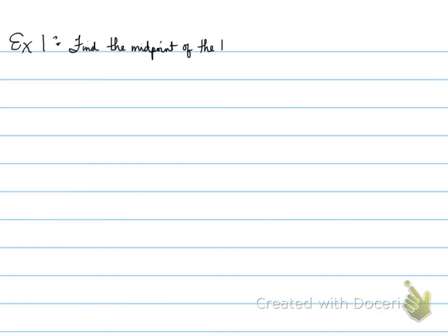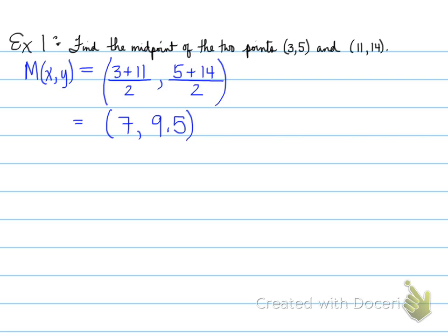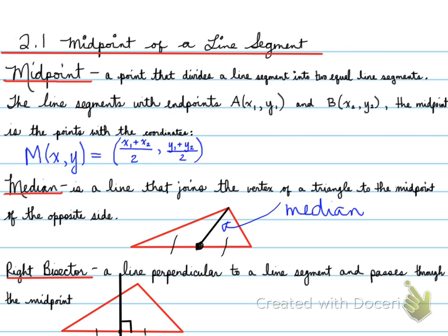Example number one. Find the midpoint of the two points 3, 5 and 11, 14. So all I want you to do for the first example is find the midpoint. Easy? Yes, it is, folks. Like I said earlier, we need to go back. We're going to look back at this particular equation, very important. That is the midpoint.